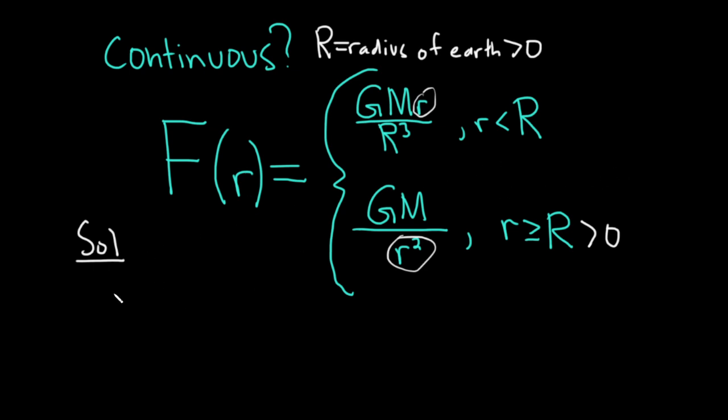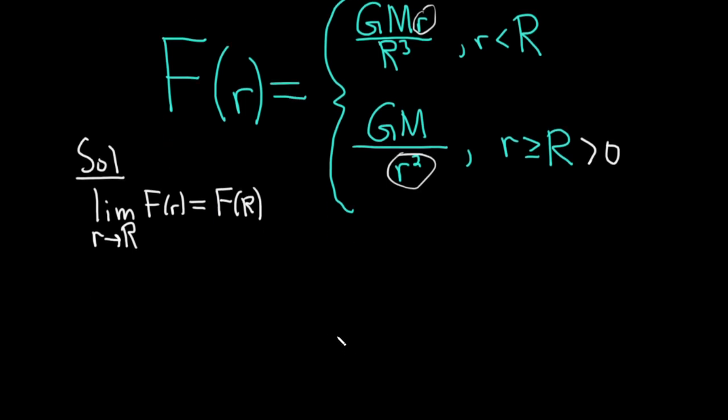So what does it mean to be continuous at big R? Using the definition of continuity, it would mean that the limit as little r approaches big R of f of little r is equal to f of big R. As I wrote that down, I thought of this formula: the limit as x approaches c of f of x equals f of c. So this is what it means for a function to be continuous at c. This is the definition.